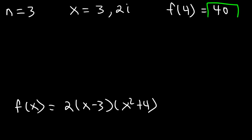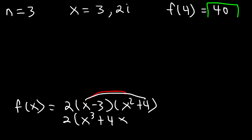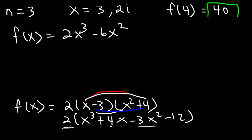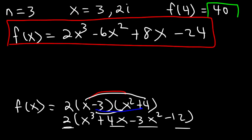Now let's FOIL. x times x squared is x cubed, and x times 4 is 4x. Then we have negative 3x squared. And negative 3 times 4 is negative 12. Now let's distribute the 2 and write it in standard form. So it's going to be 2x cubed, negative 6x squared, 8x, and negative 24. And so this is the polynomial function with a degree of 3.